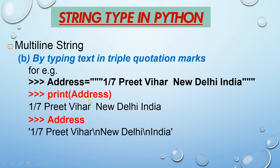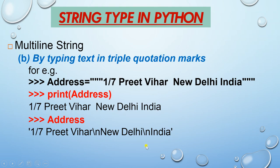The second way is by typing text in triple quotation marks. If you write the content inside triple quotes and press enter before 'New Delhi', this text will come on the next line. When you print the address, it will show the slash-n (new line character) because you pressed the enter key inside the triple-quoted multi-line string. I'll show you this practically in Python IDLE.